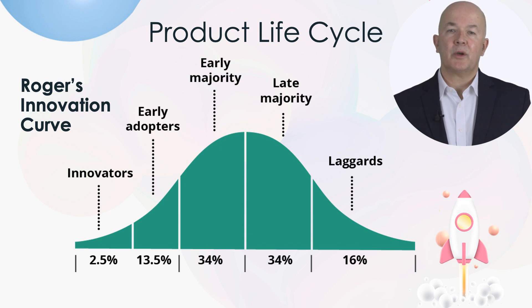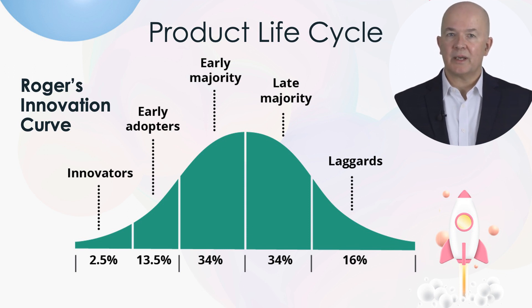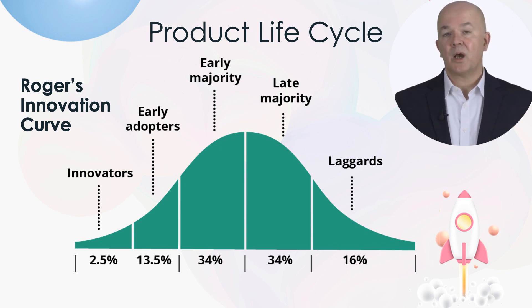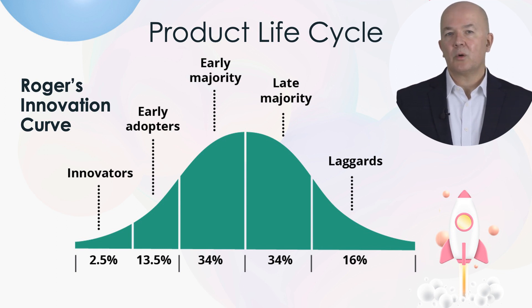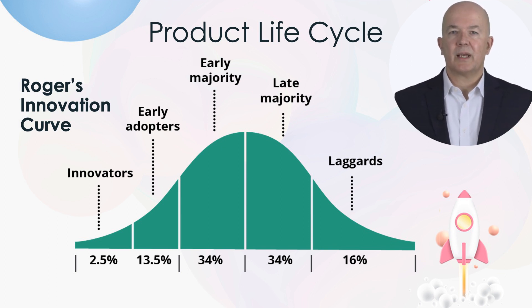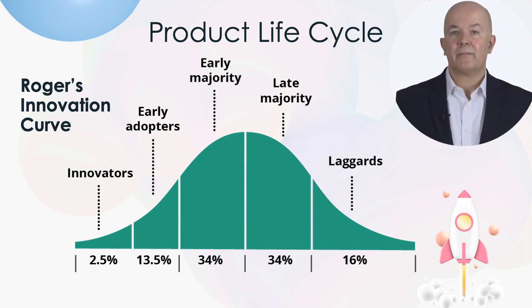This means that when you launch a product, the money is ideally going to be made in the early majority, while the late majority and laggards require a different strategy. If you are launching a new product into an existing marketplace, you still have to find the innovators and early adopters in that market for your innovation, if it is distinctly different to what is already out there.